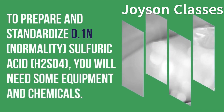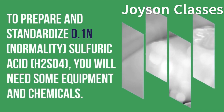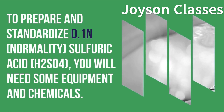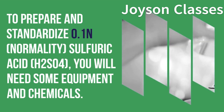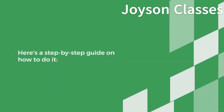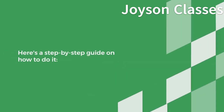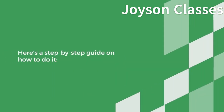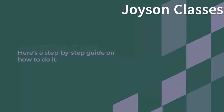To prepare and standardize 0.1N normality sulfuric acid, H2SO4, you will need some equipment and chemicals. Here's a step-by-step guide on how to do it.